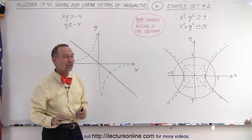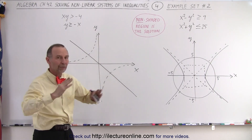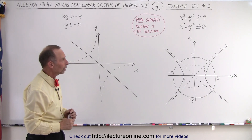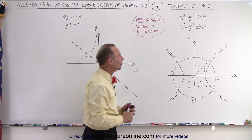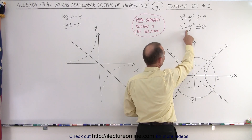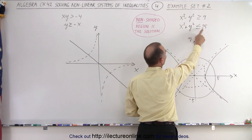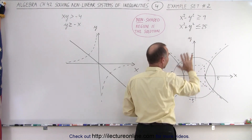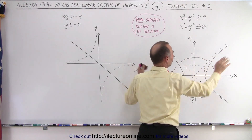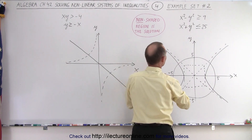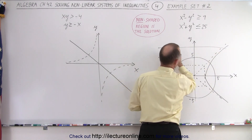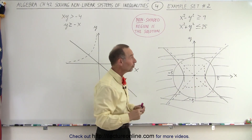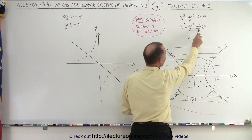The non-shaded region is the solution, so we're going to get rid of all the regions that do not satisfy the inequality. Starting with the circle right here — circle is easy. It says less than or equal to 25, which means the region inside the circle is valid, and the region outside is not. So let's get rid of everything outside the circle — only keep what's inside. The boundary is indeed included.